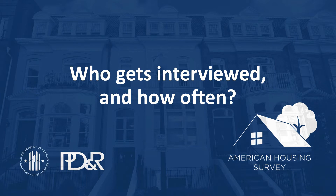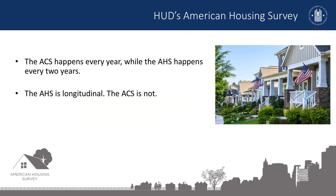Now, we'll compare who gets interviewed on each survey and how often. Both the AHS and the ACS are household surveys, meaning households are picked at random to receive the survey. But the two surveys differ in who is interviewed and how often. The ACS happens every year, while the AHS happens every two years. The AHS is longitudinal, meaning the same housing units are visited every two or four years. The ACS is not. In fact, the AHS is one of the only longitudinal housing surveys in the world, which makes it the best data source for users interested in studying changes to the U.S. housing stock over time. The previous AHS sample of housing units was revisited every other year from 1985 to 2013. A new sample of housing units was selected in 2015 and will be revisited every other year for years to come.